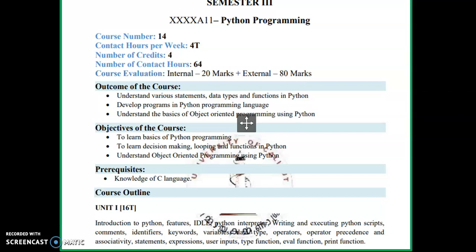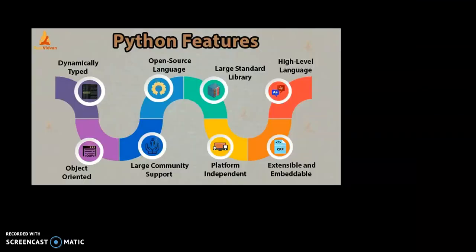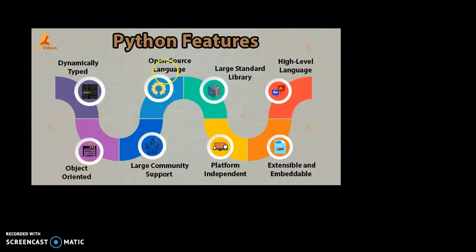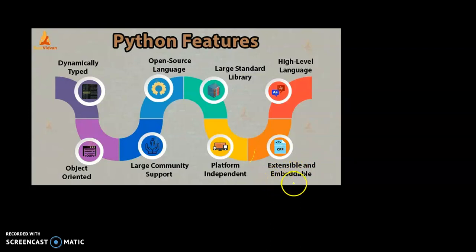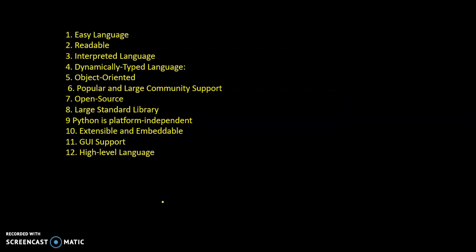Python's main features include dynamic typing. Python is also embeddable — for example, we can use Python features alongside other languages. Python can be used as a C programming language as well. We will explain all these features.